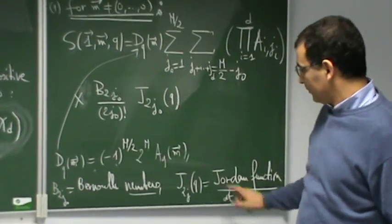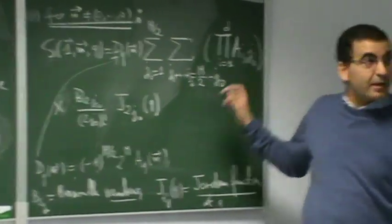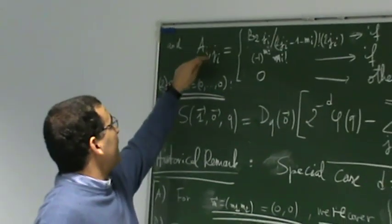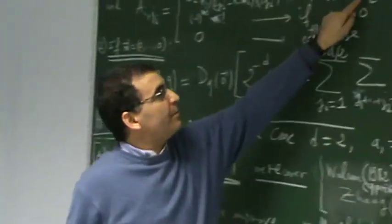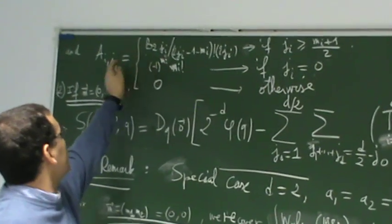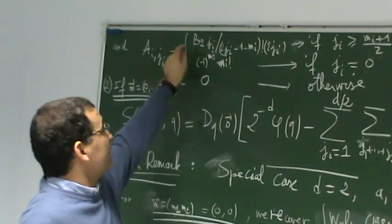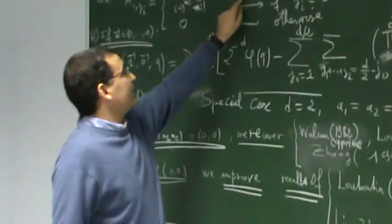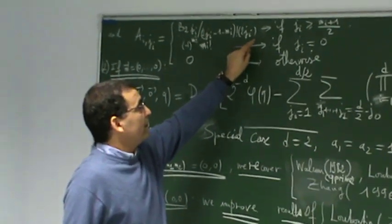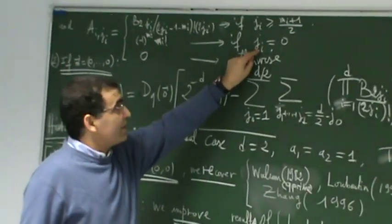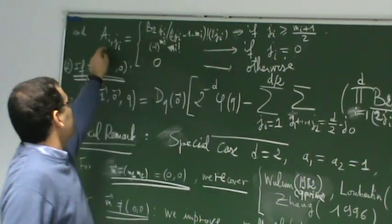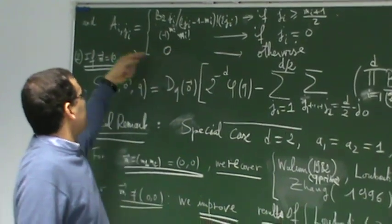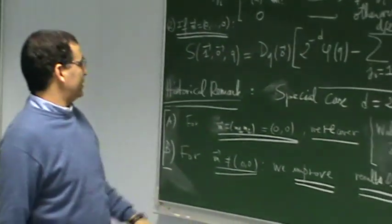multiply by the Bernoulli number here over factorial 2 G0 and here the value of Jordan function. This is Jordan function at Q and the parameter here capital E is defined as follows. If the index here is greater than M E plus one over two, the capital E is exactly the Bernoulli number divided by a factorial of this integer and divide also by 2 G E. If the index is zero, this part is exactly minus one power M E factorial M is zero. And this is exactly zero in all the other cases.